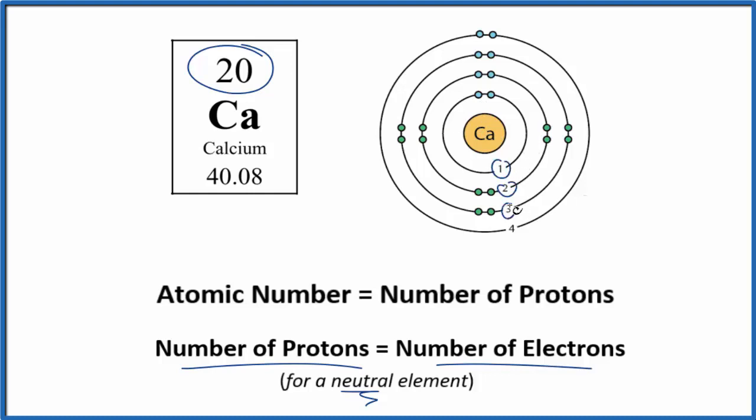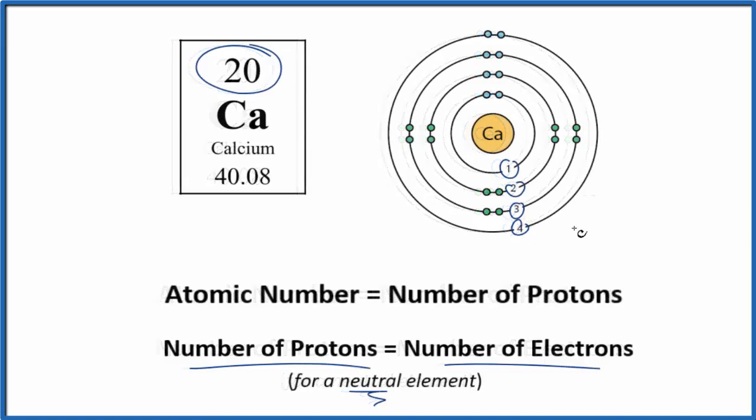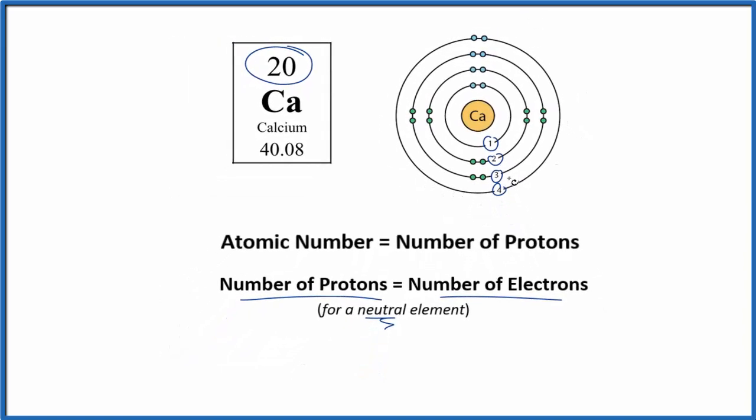We have one, two, three, four energy levels for the calcium atom. Let's take a look at the periodic table to see how to figure out these energy levels.